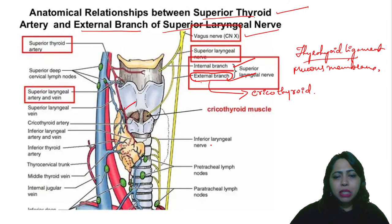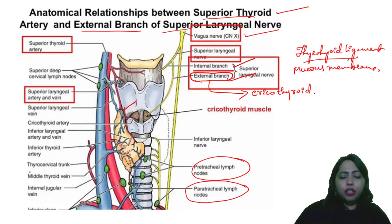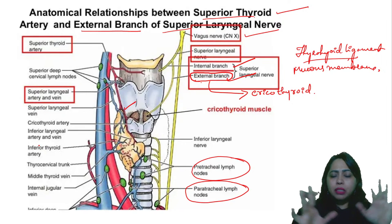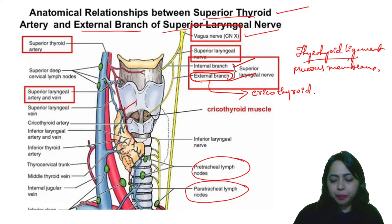You can also see the internal laryngeal nerve, pretracheal lymph nodes, and paratracheal lymph nodes. You can identify all these as relations of the thyroid gland.